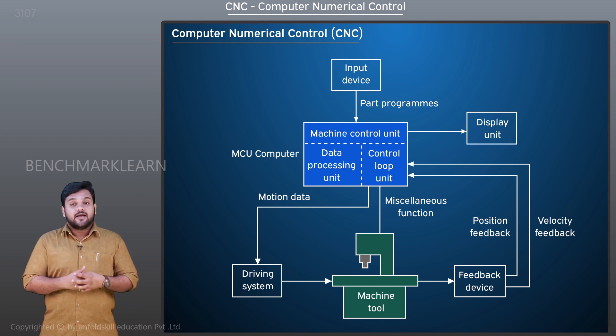The computer processes this program data and converts it into a form usable by the machine. The CNC system performs all the functions of an NC system in accordance with the stored program but with greater convenience.